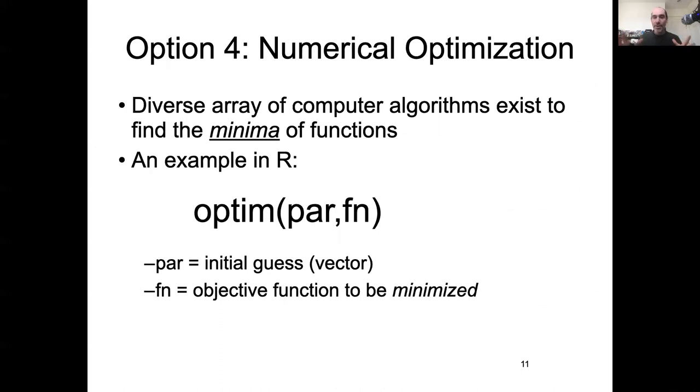So that's kind of our fourth option. So we have what we learned when we learned about maximum likelihood. We learned that there are a bunch of different computational algorithms that exist to minimize functions. For example, the one we've been using in maximum likelihood, such as optim.